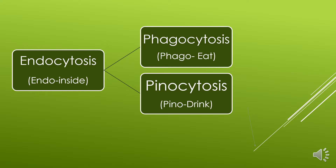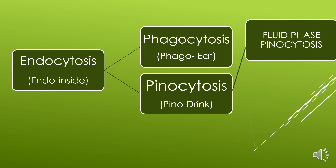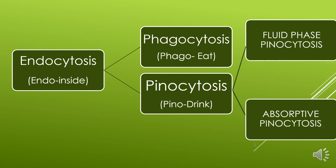Pinocytosis is divided into two types: first, fluid-phase pinocytosis; second, absorptive pinocytosis. In fluid-phase pinocytosis, substances adhere to the cell's surface site to get into the cell. In absorptive pinocytosis, substances bind to specific cell receptor sites to get into the cell.